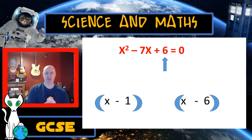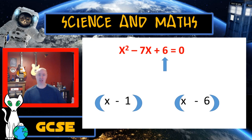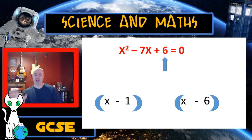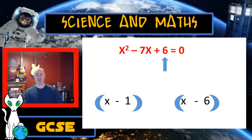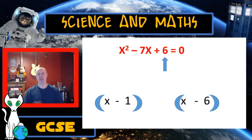One thing to avoid is thinking that x must equal minus 1 or minus 6 — that's not right. Each bracket is going to be equal to 0. If x minus 1 equals 0, then x must be plus 1. If x minus 6 equals 0, then x must be 6. A simple way to do it: just change the sign. If in one bracket it's x minus 1, then x is plus 1; if in another bracket it's x minus 6, then x is plus 6. So we always get two possible answers.